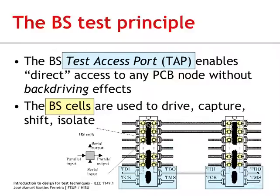The isolation capability of the boundary scan cells prevents what was known as back driving, since even when the core logic is trying to drive a 0 there will be no conflict if you wish to drive a 1.